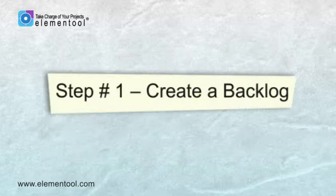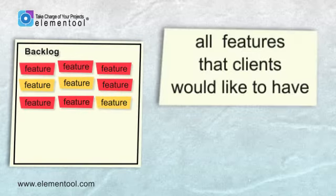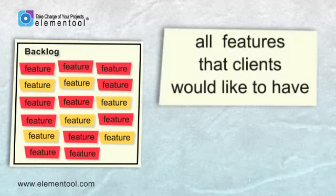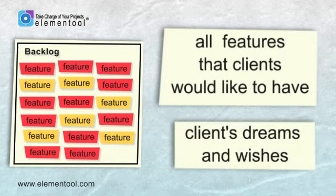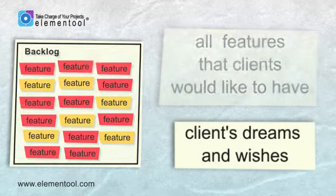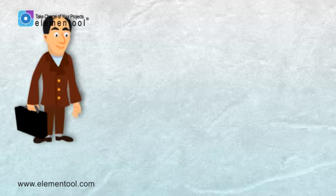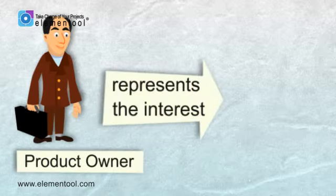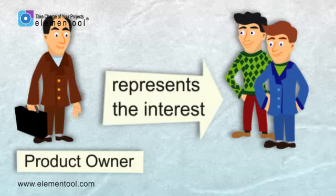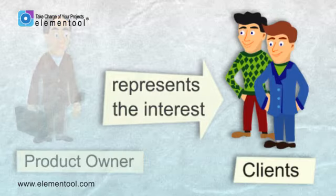Step 1: Create a Backlog. The project backlog is a list of all the features that clients would like to have as part of the complete product. It includes the client's dreams and wishes, but it doesn't mean that everything will be developed, as we'll see later. The backlog is created by the product owner, who represents the interests of the people who ordered the product — the clients.